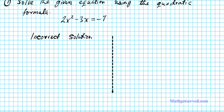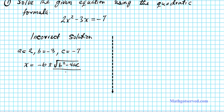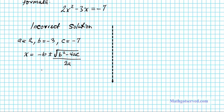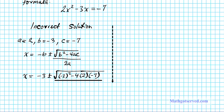So for the incorrect solution, I'm going to let a equal 2, b equals negative 3, and c equals negative 7. And then I'll write down my quadratic formula: x equals negative b plus or minus the square root of b squared minus 4ac over 2a.